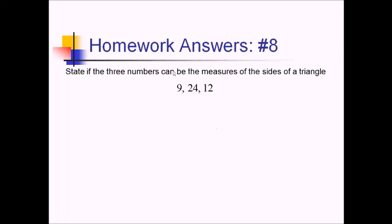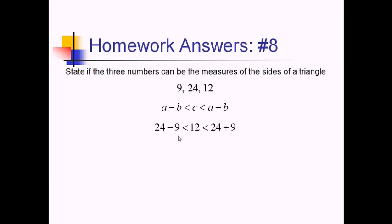For number eight, we want to know if these three numbers can be the measures of the sides of a triangle. We will use our triangle inequality theorem, which says the third side has to be between the difference and the sum of the other two sides. For C I'll use 12, and for A and B I'll use 24 and 9. So we've got 12, and we're seeing if that's between 24 minus 9 and 24 plus 9. Well, 24 minus 9 is 15 and 24 plus 9 is 33 — 12 is not between those numbers, so these cannot be the measures of triangle sides.